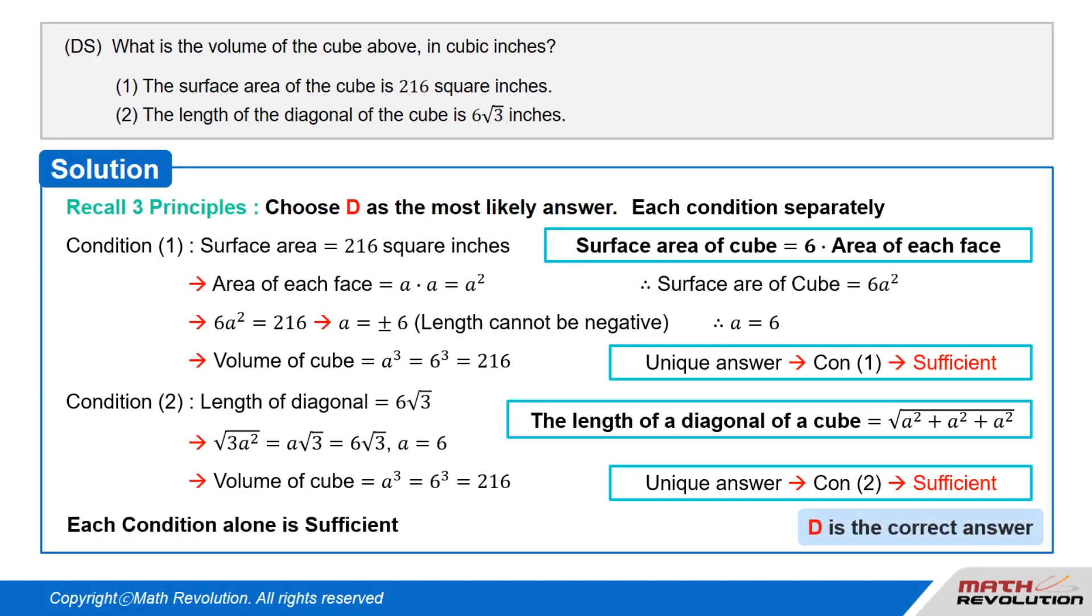Each condition alone is sufficient. The answer is obviously D if there is one variable given in the original condition. So, D is the correct answer. Answer: D.